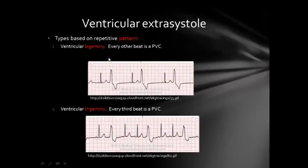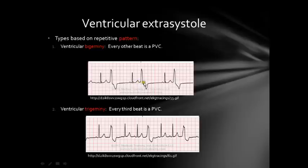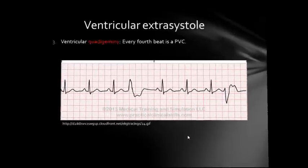We can also classify ventricular extrasystoles based on their repetitive pattern. The first is called ventricular bigeminy: every other beat is a premature ventricular contraction — one normal beat, one ventricular extrasystole, repeating. The extrasystole has no P wave, a wide QRS complex, an inverted T wave, and is followed by a pause. Ventricular trigeminy is where every third beat is a premature ventricular contraction: normal beat, normal beat, ventricular extrasystole, repeating.